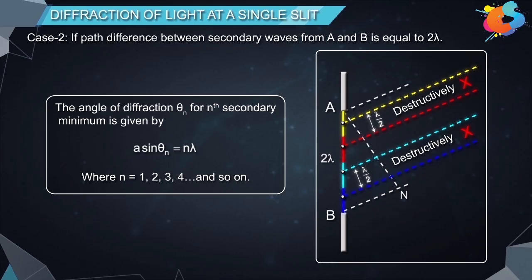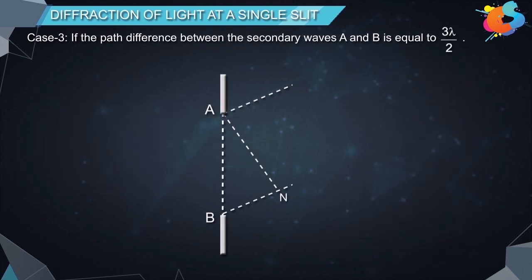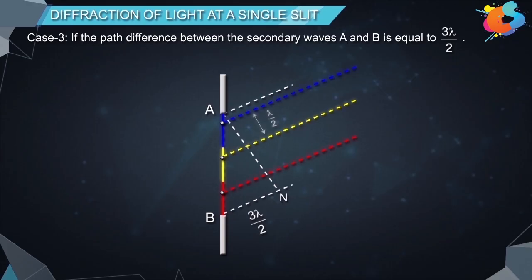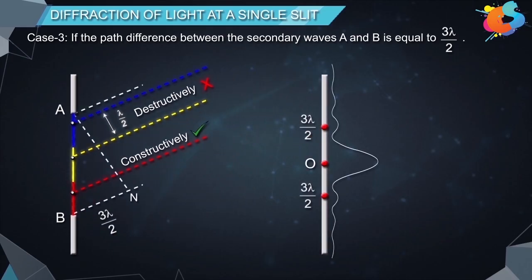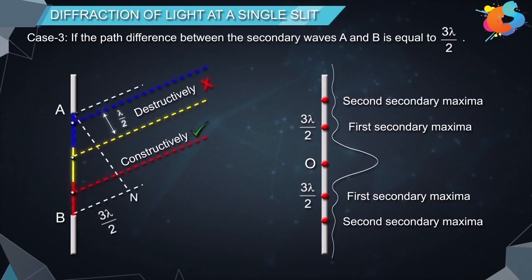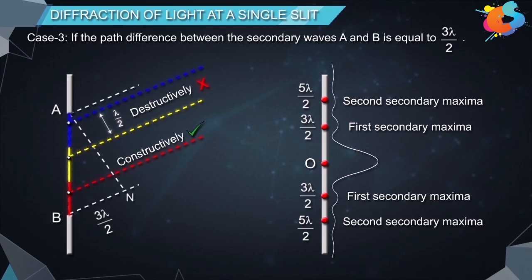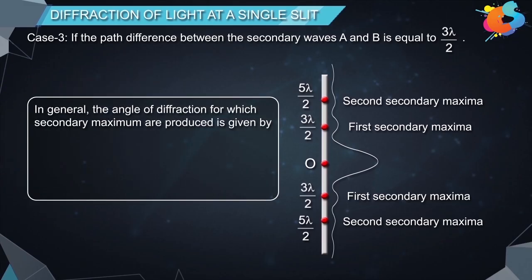Now let us find the positions of secondary maxima. If the path difference between secondary waves A and B is equal to three lambda by two, the wavefront AB can be divided into three equal parts. The path difference between corresponding points of the first two parts equals lambda by 2, so they interfere destructively. However, the wavelets from the third unused part interfere constructively at point P to produce a weak first secondary maximum. Similarly, the second secondary maximum is formed where the path difference equals five lambda by two. In general, the angle of diffraction for secondary maxima is given by a sin theta_n equals (2n + 1) lambda by 2, where n equals 1, 2, 3, 4, and so on.